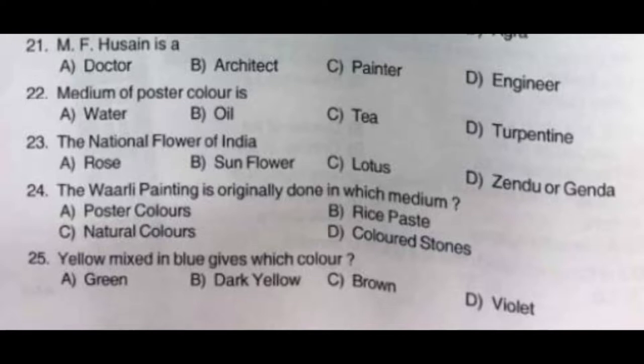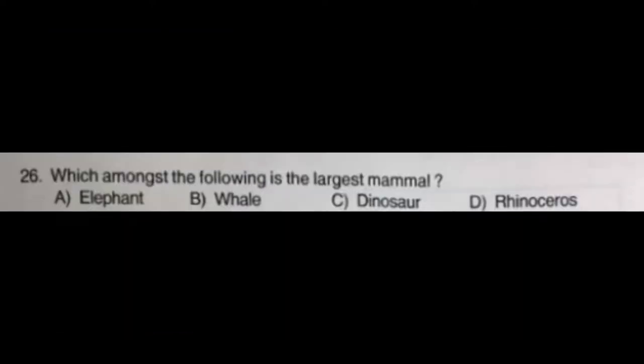The correct answer is option B: rice paste. Question number twenty-five: Yellow mixed in blue gives which color — option A: green, option B: dark yellow, option C: brown, option D: violet. The correct answer is option A: green.